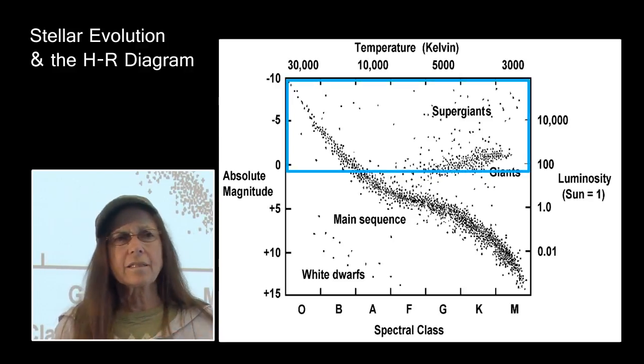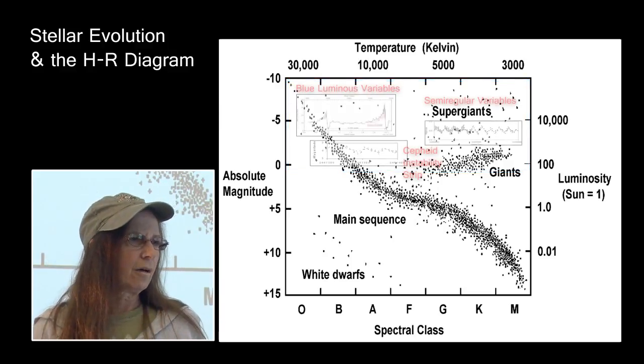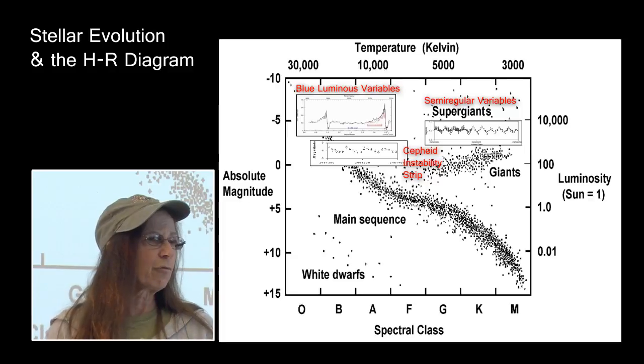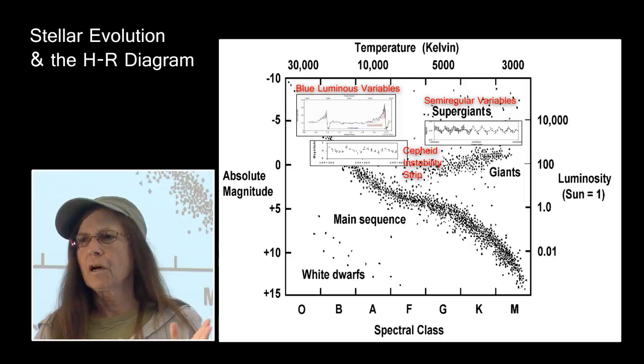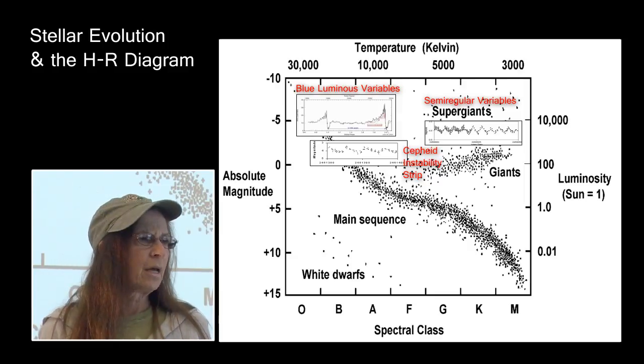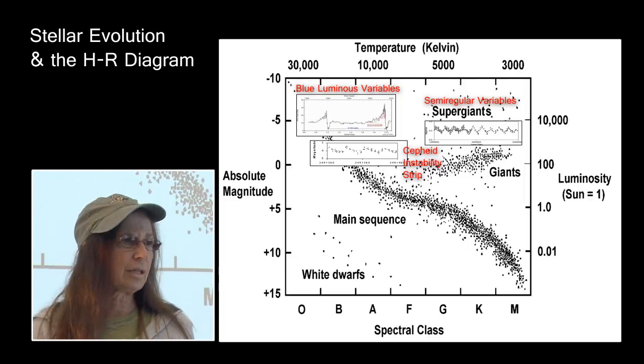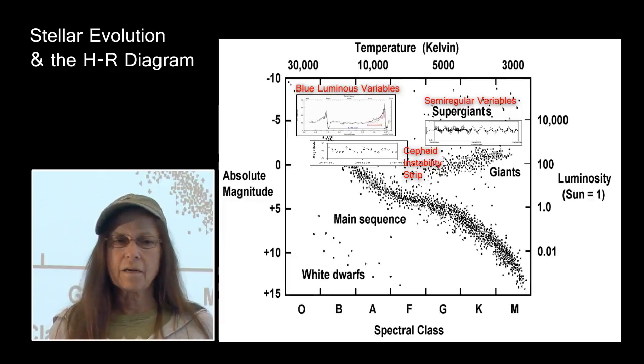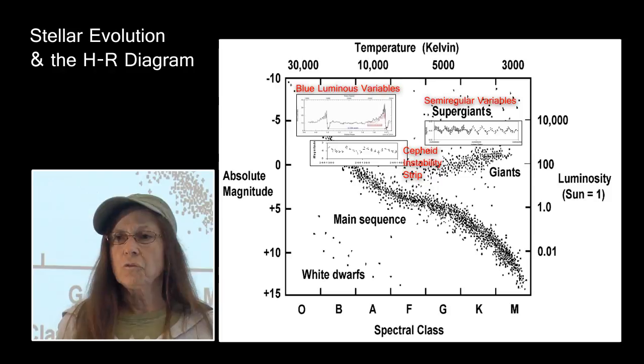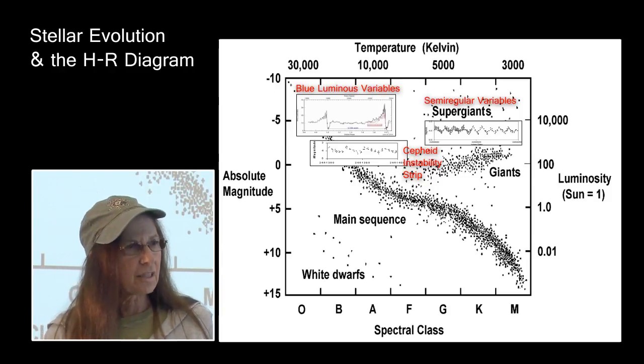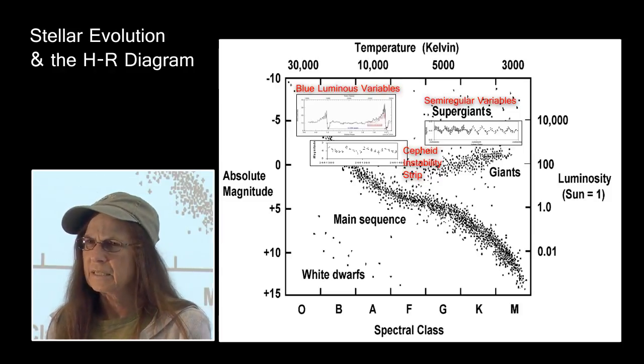So up in that part, in the more massive part of the HR diagram, there are three instability strips. The Cepheid instability strip, the semi-regular, and the blue luminous variables. Now, as stars transition through those regions on the HR diagram, they are evolving from one stage of stellar evolution to another stage of stellar evolution. While they are doing that, their brightness is varying over time. So if you record that change and produce the light curve, you will see a light curve that is pretty much specific to that specific area of instability.